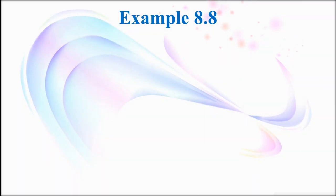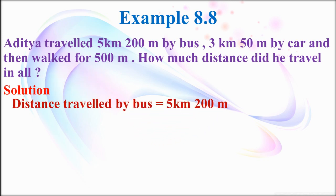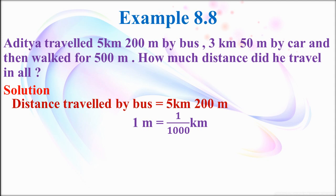Now we are going to solve word problems. Aditya traveled 5 kilometer 200 meter by bus, 3 kilometer 50 meter by car, and walked for 500 meter. How much distance did he travel in all? First, write the distance traveled by bus: 5 kilometer 200 meter. Here two units are different — kilometer and meter. We are going to convert: 1 meter equals 1 by 1000 kilometer.